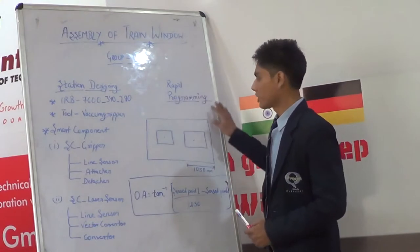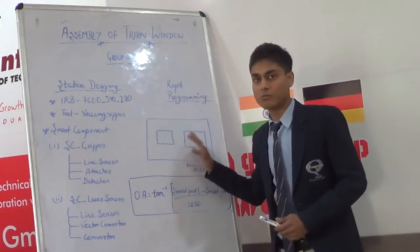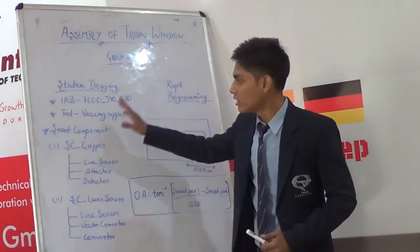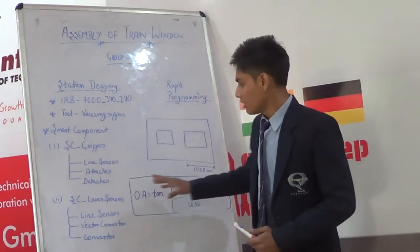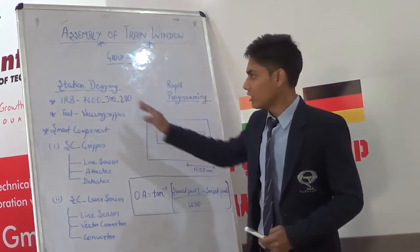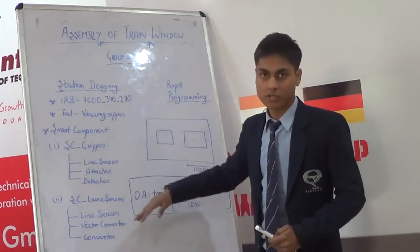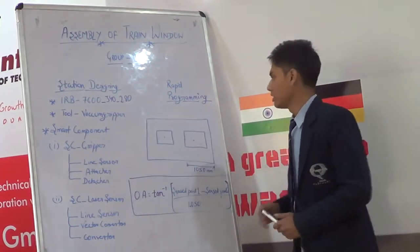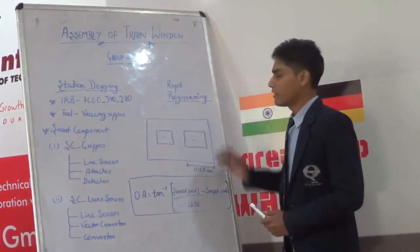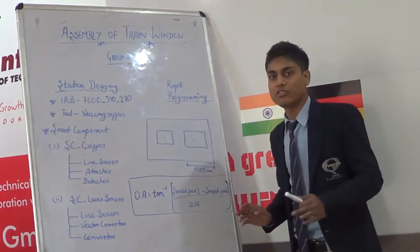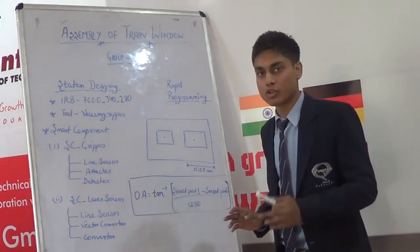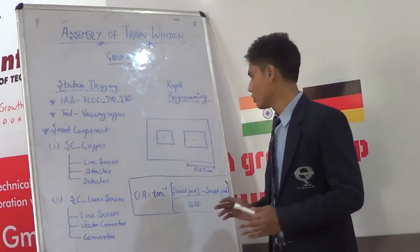Now coming to the Rapid Programming part, it is the main part because it will perform all the operations that we have set up in the programming. Initially, we set all the digital outputs of the robot to zero.